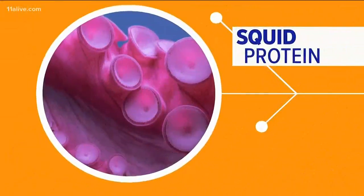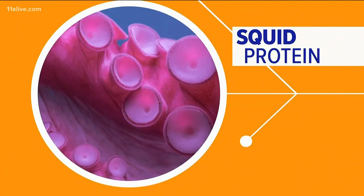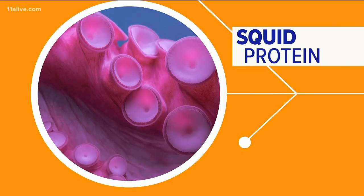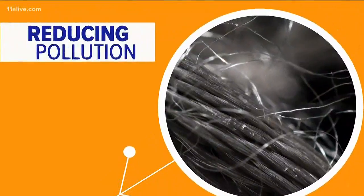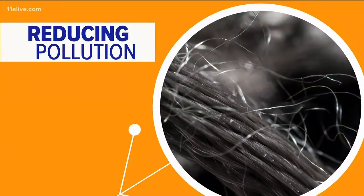Penn State scientists have discovered a protein on the suction cups of a squid that can be used to create a biodegradable form of plastic fiber. Those fibers could be used in the manufacturing of clothes and fabrics that would be eco-friendly and reduce pollution.